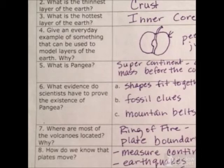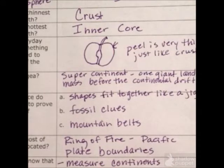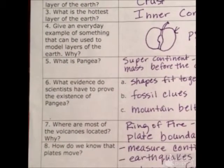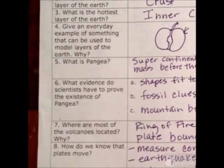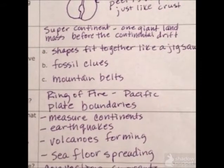Number four: give an everyday example of something that can be used to model the layers of the earth. We used an apple. The peel is very thin compared to the rest of the object, just like the crust is very thin compared to the entire earth. Number five: what is Pangea? It is the supercontinent — one giant landmass before the continental drift.